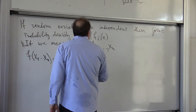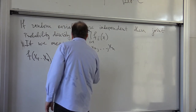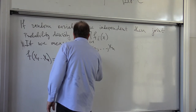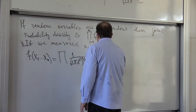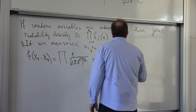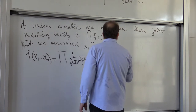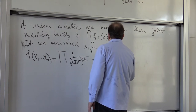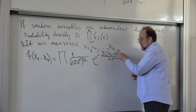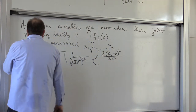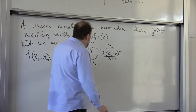So the probability is just the product: 1 over 2 pi sigma squared to the power n over 2, times e to the minus sum of xi minus mu squared divided by 2 sigma squared. So for these outcomes of the measurement, this is the probability density of the random vector x1 up to xn — this is the joint probability density.